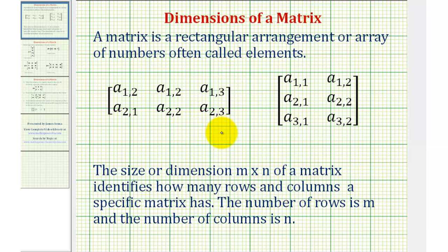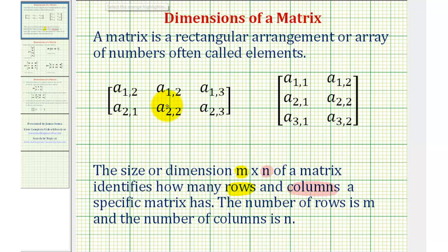And this is why it's so important to understand the dimensions of a matrix. The size or dimension m by n of a matrix identifies how many rows and columns a specific matrix has. The number of rows is m and the number of columns is n, where rows go left and right and columns go up and down.